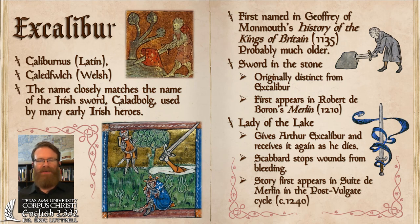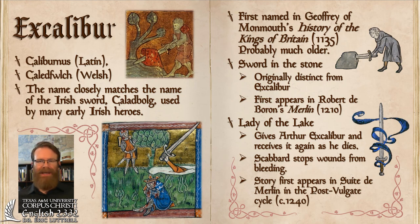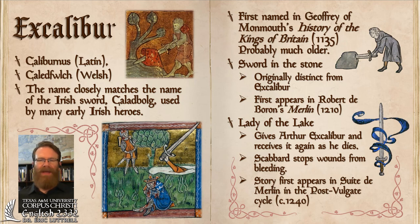Merlin gives the boy to a knight named Hector who raises him, but Arthur doesn't know who he is. The whole land is divided among contending kings until one day a sword appears in a stone, inscribed with: 'Whoever pulls this sword from this stone and anvil' — there's an anvil in the early versions — 'is rightwise king of all England.' All the nobles try to pull the sword to become king, none of them can, but only Arthur can do so easily, while others are distracted at a tournament.